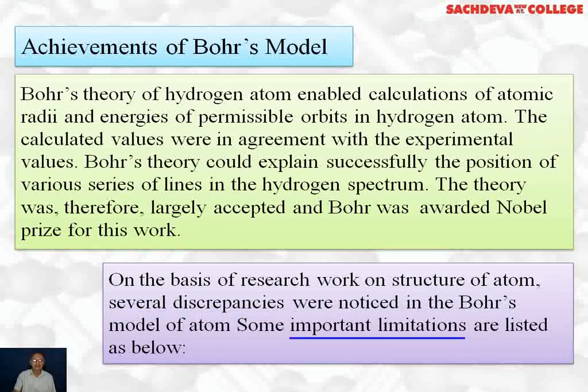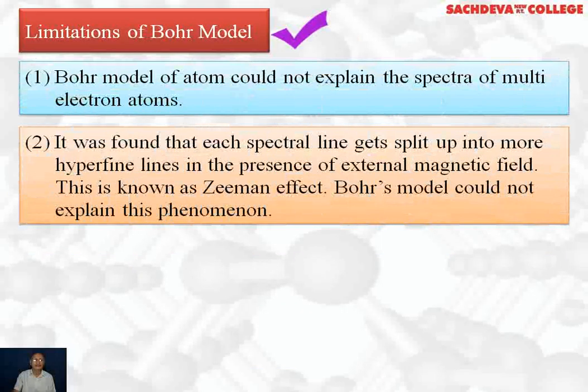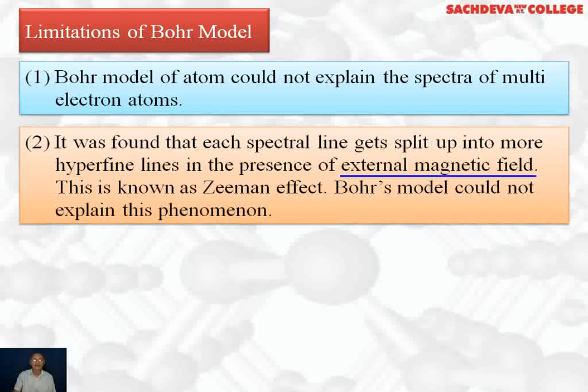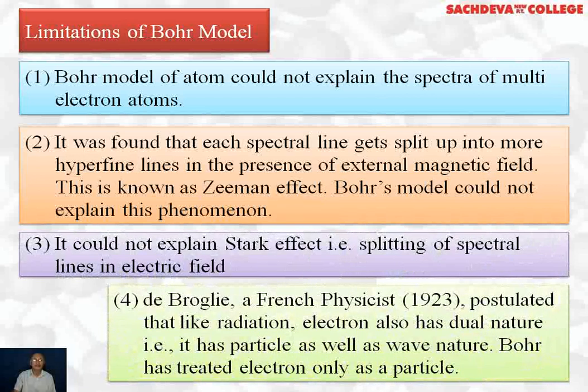Limitations of Bohr model: Bohr model of atom could not explain the spectra of multi-electron atoms. Second point, it was found that each spectral line gets split up into more hyperfine lines in the presence of external magnetic field. This is known as Zeeman effect. Bohr's model could not explain this phenomenon.